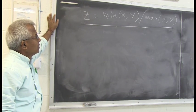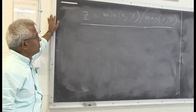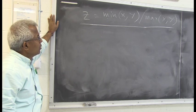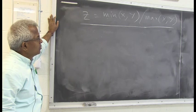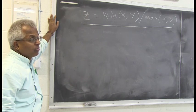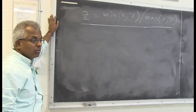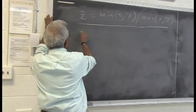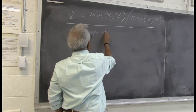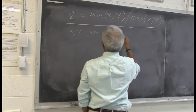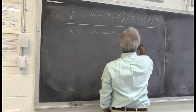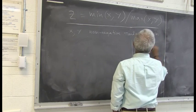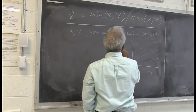Let's look at this problem. This is the ratio of two random variables, but the ratio itself is a function of random variables. We have x and y, with minimum and maximum statistics. One thing we can see is z will always be less than 1, because minimum over maximum will always be less than 1. So let's do this for non-negative random variables. X and y are non-negative, which means the joint density function of x and y is non-negative in the first quadrant and zero everywhere else.